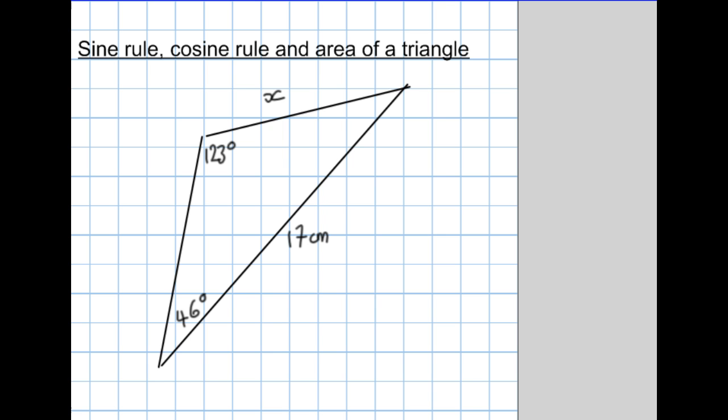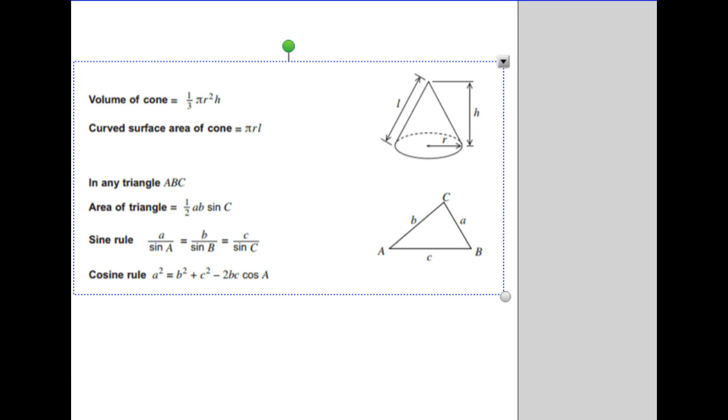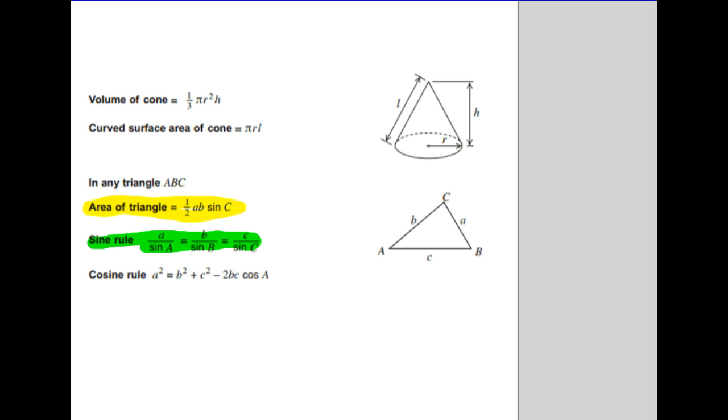Before I go any further, I'll just remind you that you have these formulas in your exam paper. Here we go. If you look, this is just a section of it. You have the area of a triangle formula here, you have one form of the sine rule here, and you have the cosine rule here.